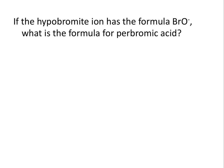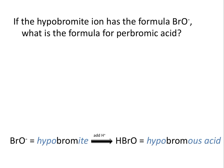Let's try an example that combines our knowledge of naming polyatomic oxyanions with naming acids. If you need additional help naming polyatomic oxyanions, please see the naming ionic compounds tutorial. If the hypobromite ion has the formula BrO⁻, what is the formula for perbromic acid? We know BrO⁻ is called hypobromite. Adding enough hydrogen ions to balance the negative charge gives the formula HBrO, and this becomes hypobromous acid — retaining the hypo- prefix and changing the -ITE ending to -US.